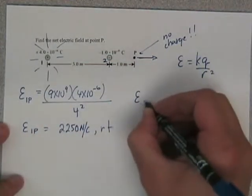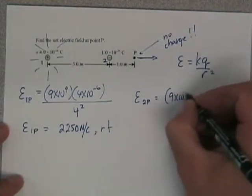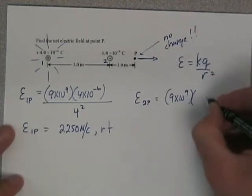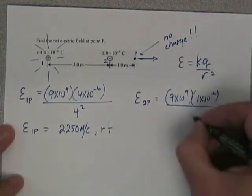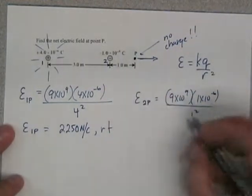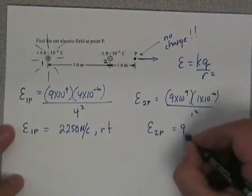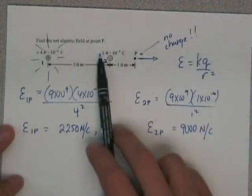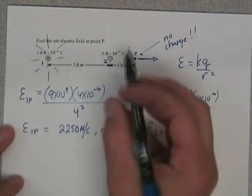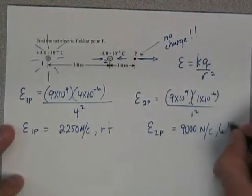For the electric field that 2 is creating at point P, 9 times 10 to the 9, that's 1 times 10 to the minus 6 over top of 1 squared, because it's just from here, there's 1. So 2 on P, that is going to be 9,000 newtons per coulomb, and then since this thing is a negative, that means that your field lines are coming in like this, which means that this one's going to be left.